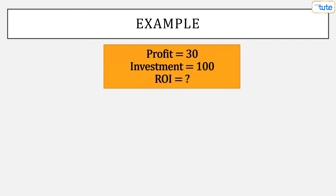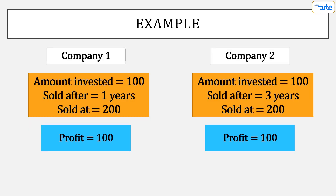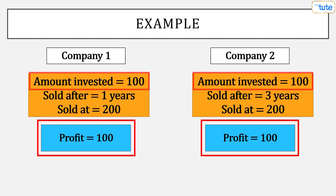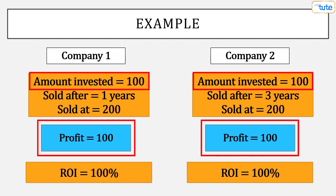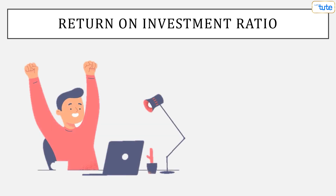Suppose an investor earned a profit of 30 on an investment of 100, then that means his ROI is 30%. Similarly, in the example we discussed at the start, earning 100 on an investment of 100 gives us a return on investment of 100%. So in both companies, our returns are 100%. Isn't this one of the simplest ratios to calculate?